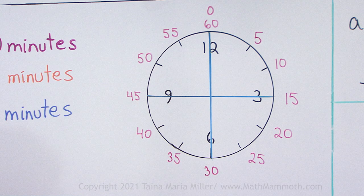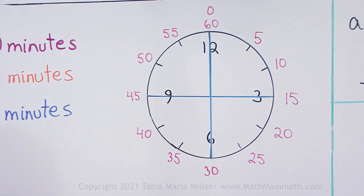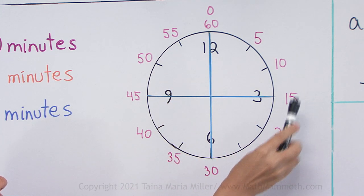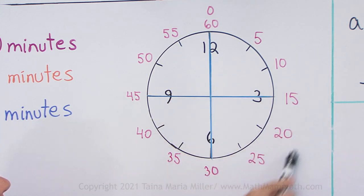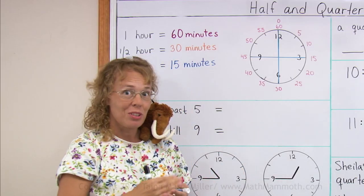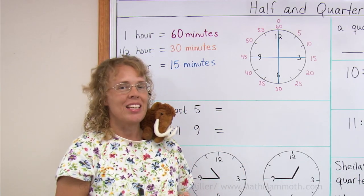And we can see that 60 minutes divided into four parts, each part here would be 15 minutes. And then this part from here to here is another 15 minutes and another and another. So there's four times 15 minutes in an hour.